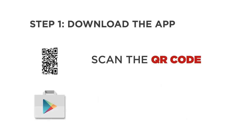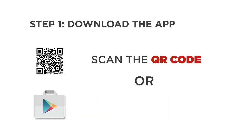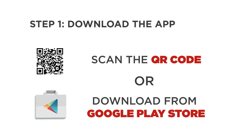To get the Mobile Security app, you can scan the QR code that is placed in the license certificate found after purchasing any of Bitdefender's internet security packages. You can also find the app from the Google Play Store and simply download to use.